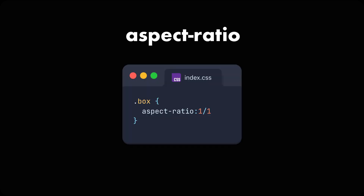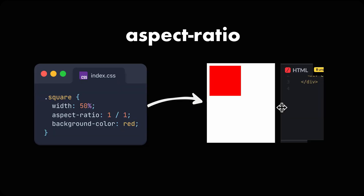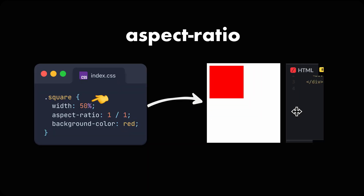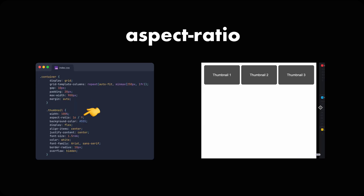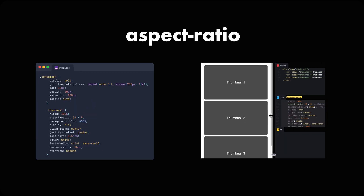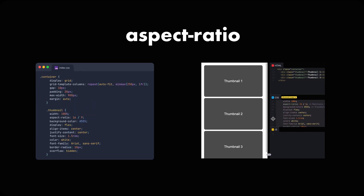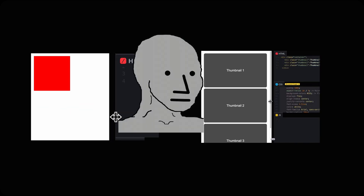Speaking of width, you can also use aspect-ratio to set an aspect ratio for your element. This is useful when you need a square with a percentage-based width, or when you're trying to show a thumbnail that always stays in a 16 by 9 aspect ratio. This is really good for responsiveness.